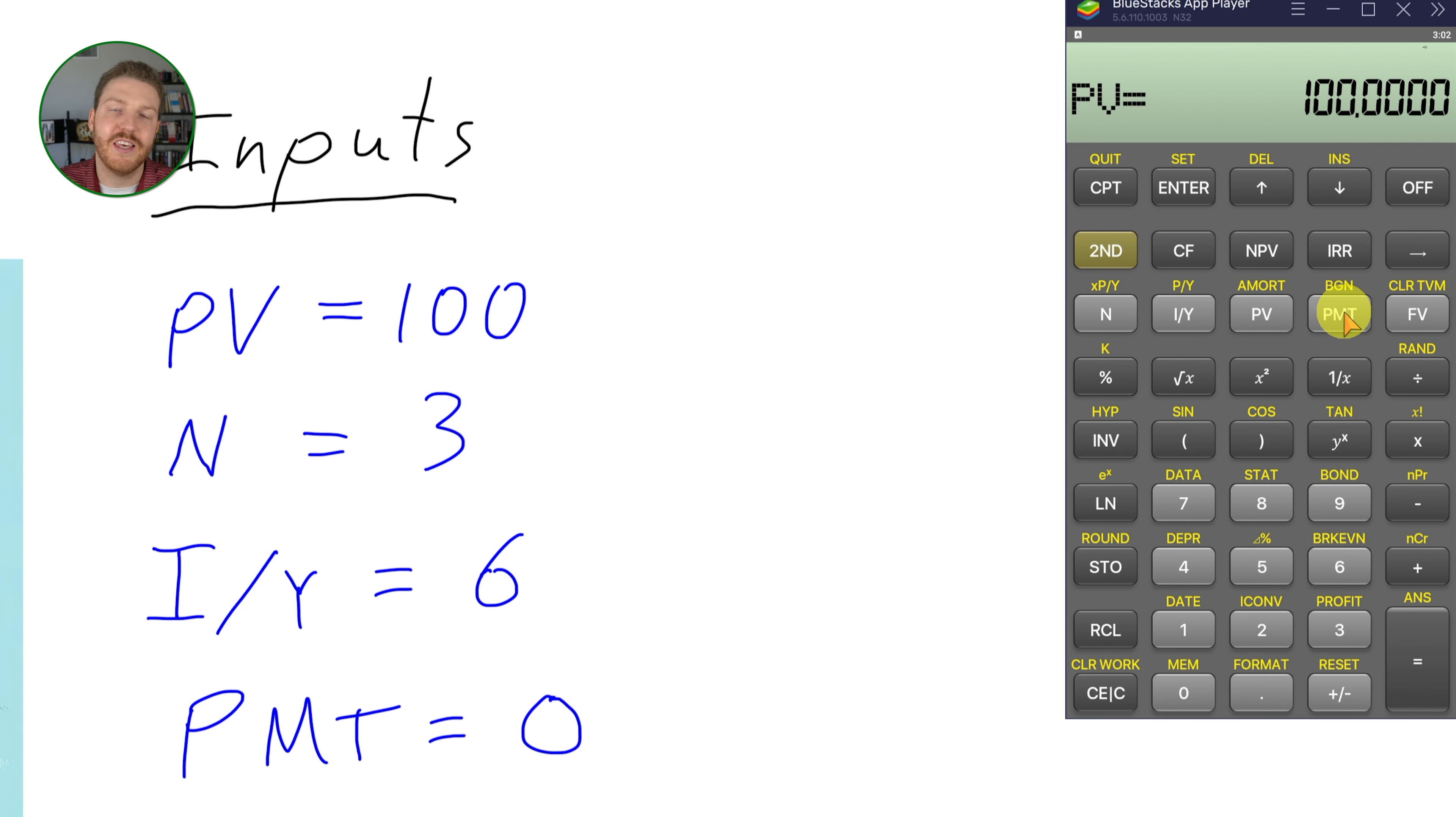Our payment, this is the coupon, the coupon payment on a bond. And this is just a zero coupon lump sum payment that we've been talking about this whole time. So payment is going to be equal to zero.